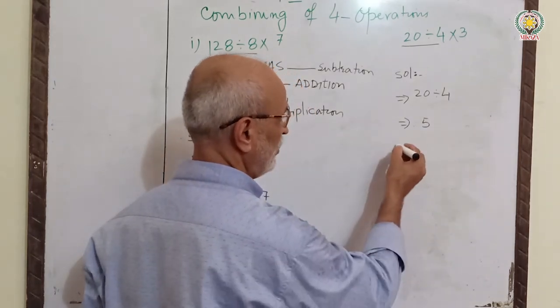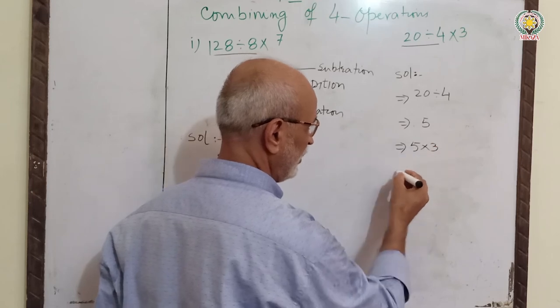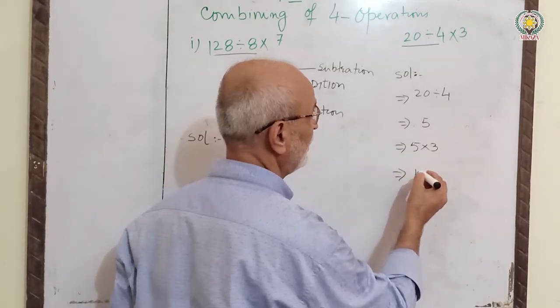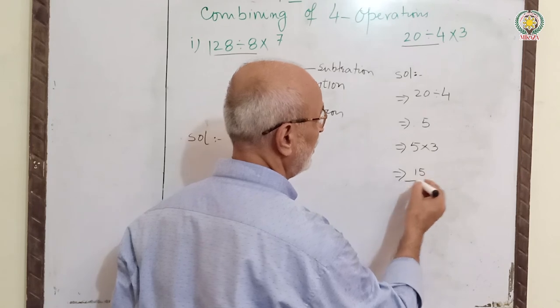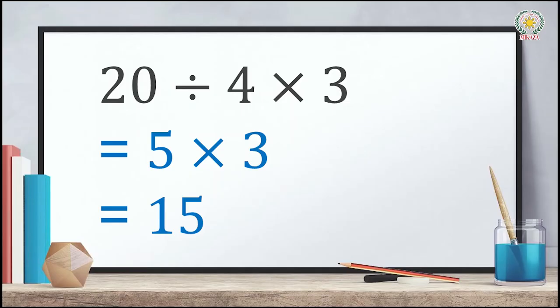20 divided by 4 equals 5. Now, 5 multiplied by 3 equals 15. This is our answer.